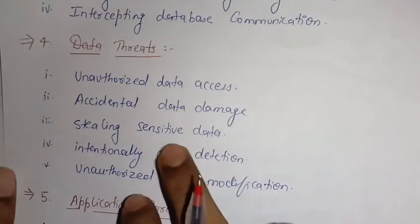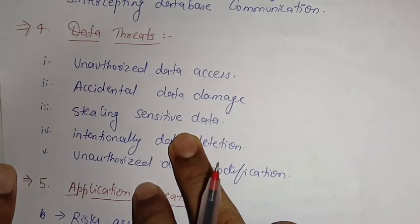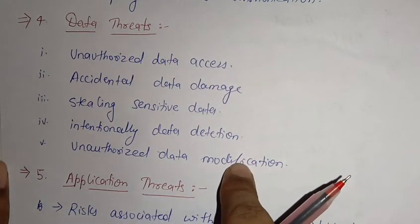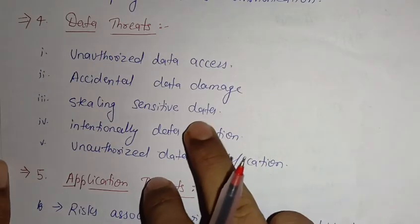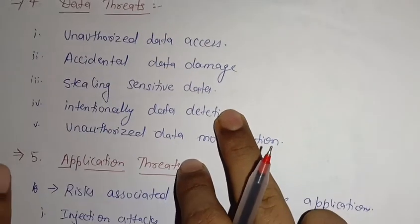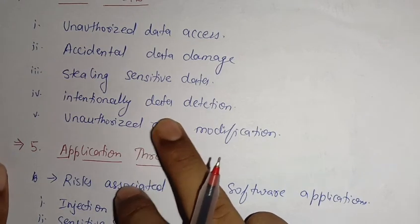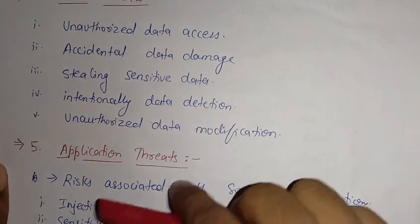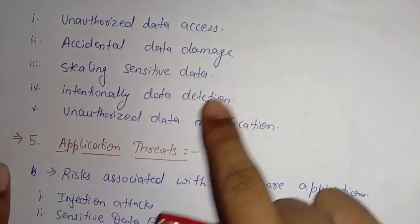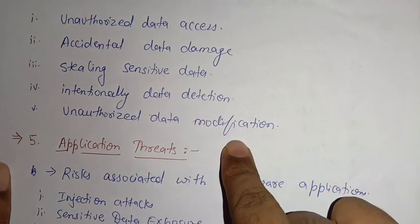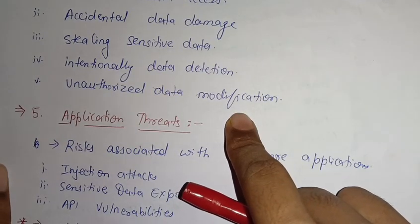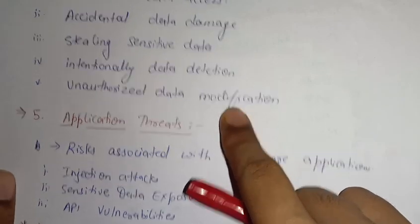The third type of data threat is stealing sensitive data — in a database management system there are certain highly sensitive data important to an organization, and when someone attacks that particular data it is considered a data threat. The fourth is intentional data deletion — trying to breach and steal database information intentionally. The fifth is unauthorized data modification — modifying data without permission from the authorized user.